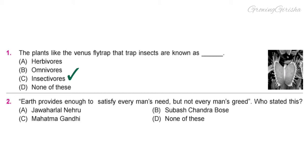Question 2. "Earth provides enough to satisfy every man's need, but not every man's greed." Who stated this? Option C: Mahatma Gandhi.